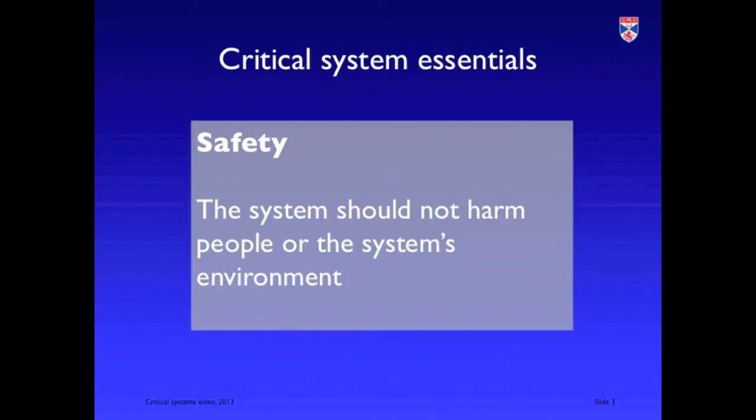Safety is about the system behaving in such a way that it should never threaten or injure people. This doesn't mean just that it should operate correctly, but it means that even if it fails or goes wrong in some way, it should still not cause injury to people or environmental damage.